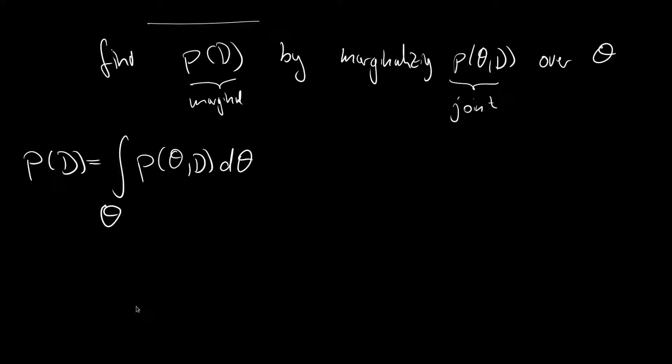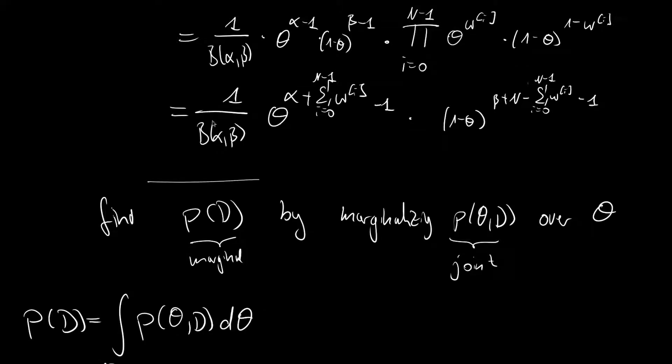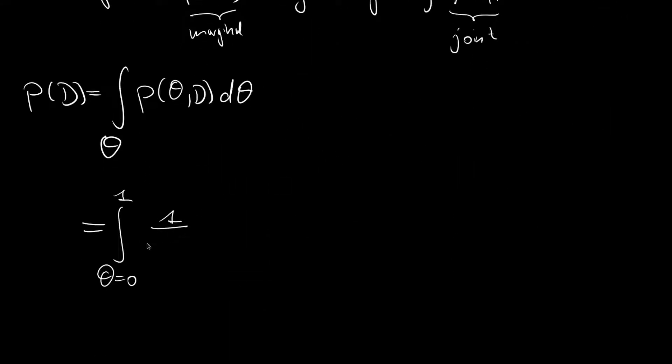P of D is the integral of overall thetas of P of theta and D, d theta. We can make this more explicit: the theta from 0 to 1. And then we plug in what we had. It was 1 over the beta function of alpha and beta times theta to the alpha plus summation from 0 to n-1 over the observations minus 1 times 1 minus theta to the beta plus n minus summation from 0 to n-1 over the weather observations minus 1, d theta.